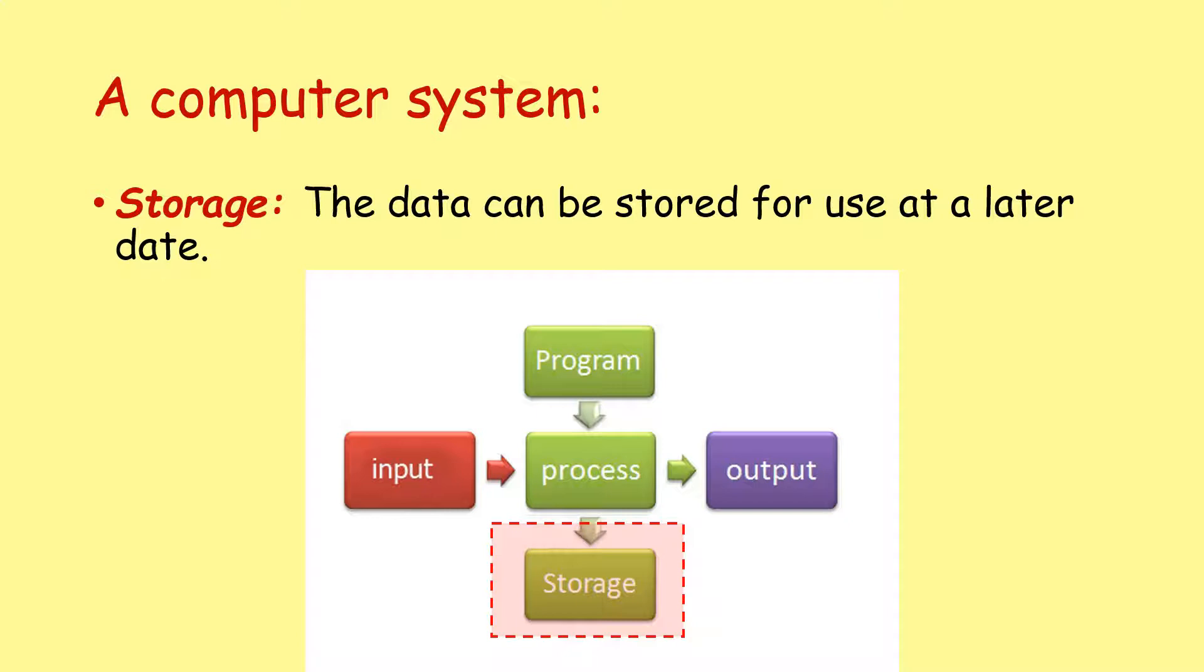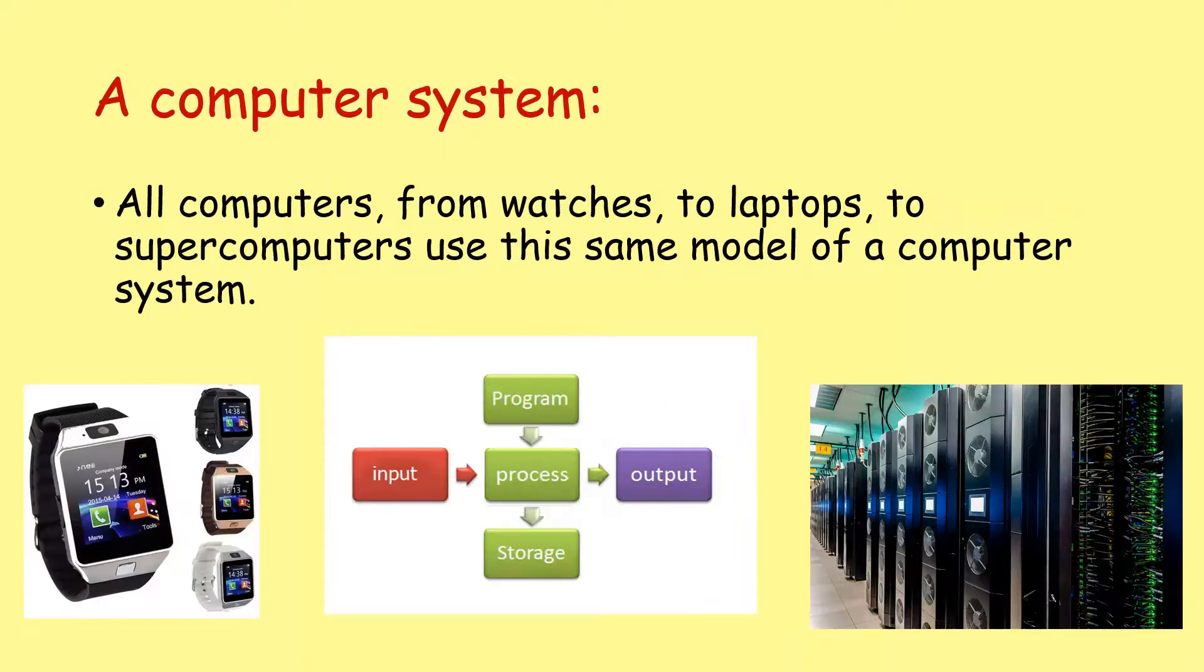So then we've got this kind of full diagram here. We've got the input, we've got the process and we've got the output. But we've also got the idea of the program is providing that process and maybe the results of that process might be saved and stored in some way. So all computer devices from smartwatches to laptops to supercomputers use this same basic model of a computer system. Again this is a very broad overview, a very abstract overview of how a computer system works.